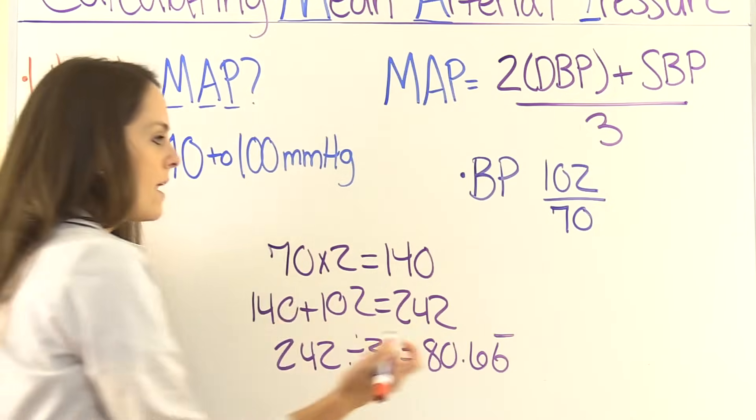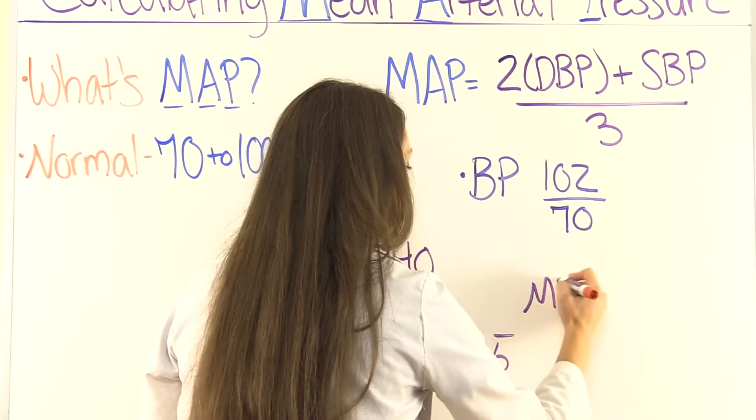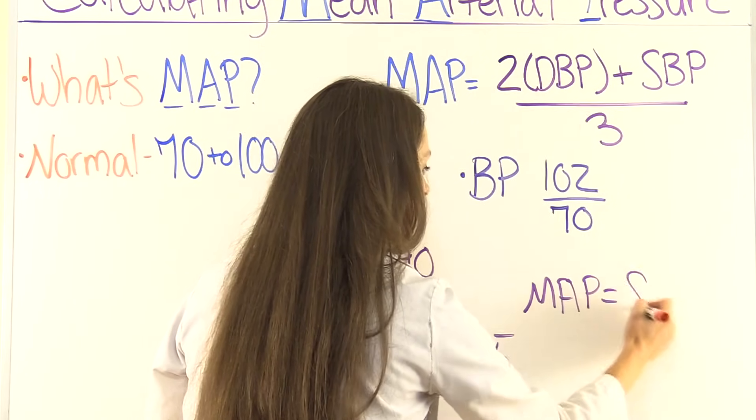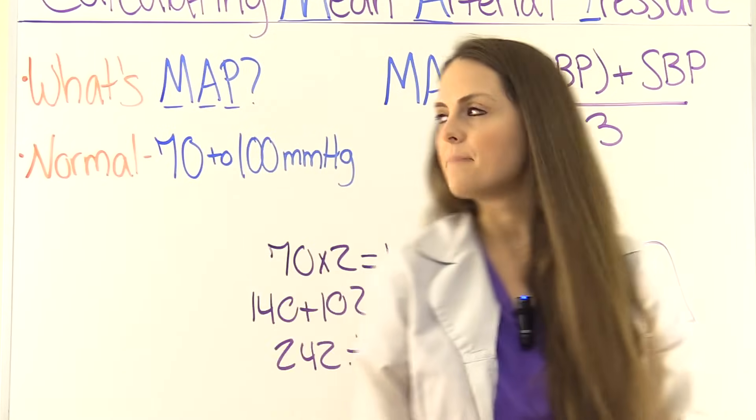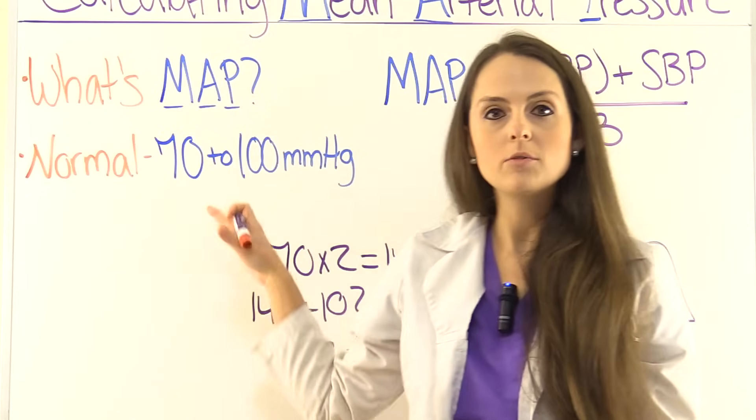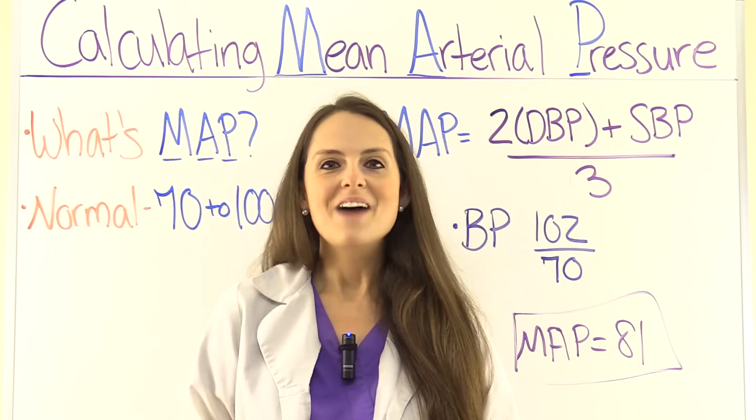We're going to round that up. So our MAP is 81. And how do we interpret that? That is within normal limits. So our MAP is good.